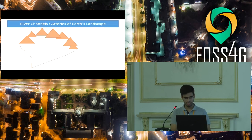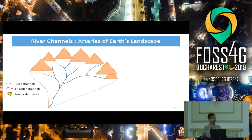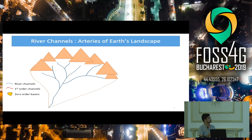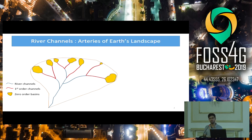So first, I'll talk about channel heads — what are these? This is a very simple schematic explaining what I mean by first-order channels. Our study area was the Himalayas. Consider that this is a basin for a particular river. The red ones are the first-order channels, or streams. And these are the zero-order basins which contribute to the first-order streams. And these are exactly the locations which we refer to as channel heads, and we are interested in extracting their locations.